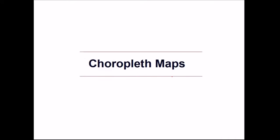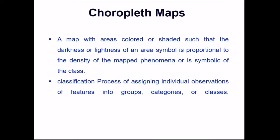Now let us talk about choropleth maps. Choropleth maps are maps with areas colored or shaded such that the darkness or lightness of an area symbol is proportional to the density of map phenomena or is symbolic of the class. The coloring or shaded area corresponds to the density of that map phenomena.